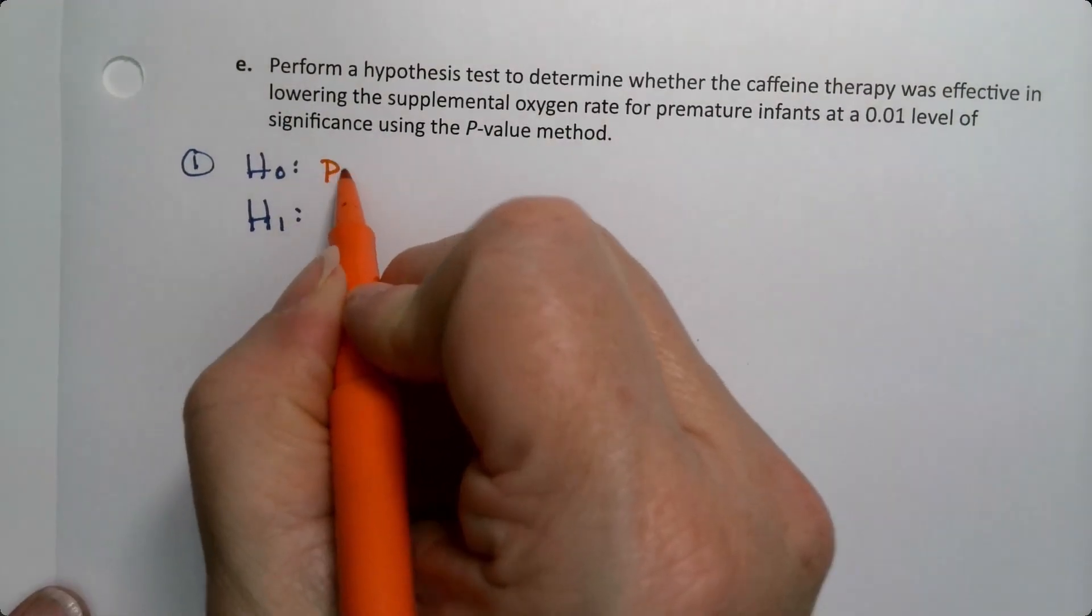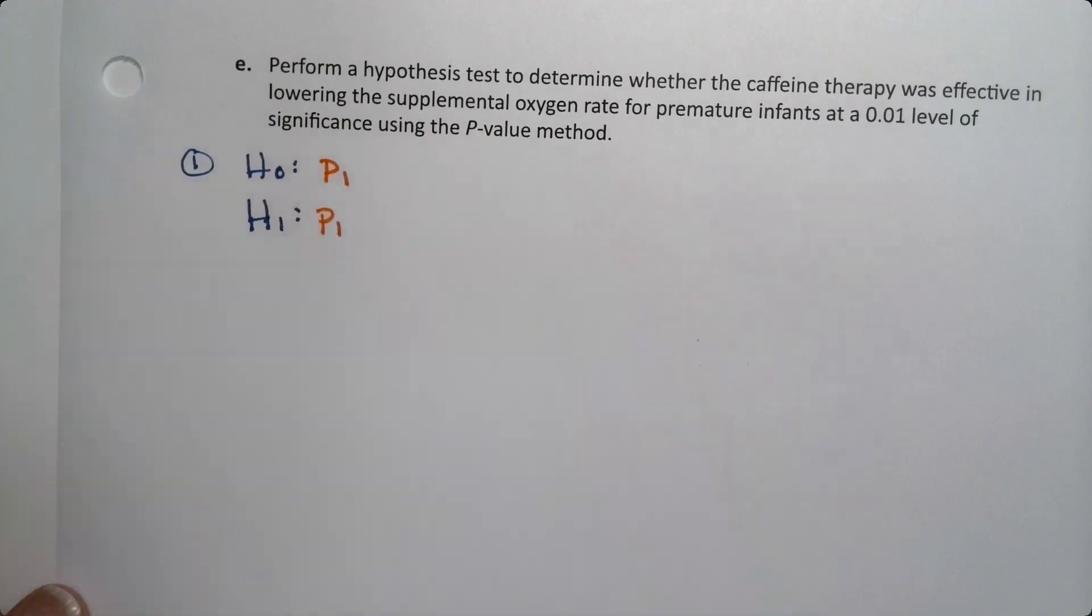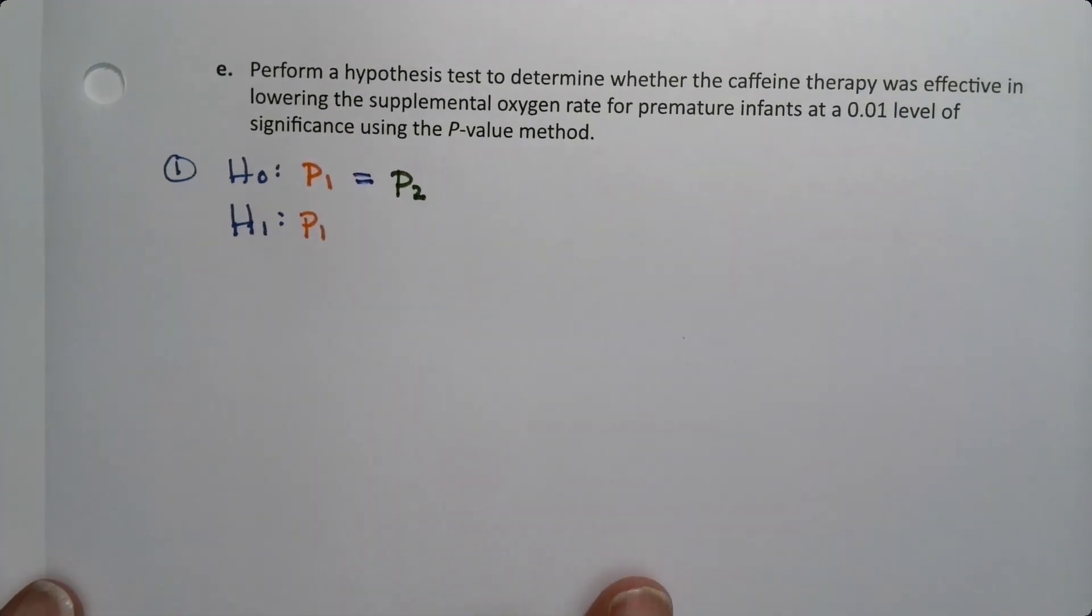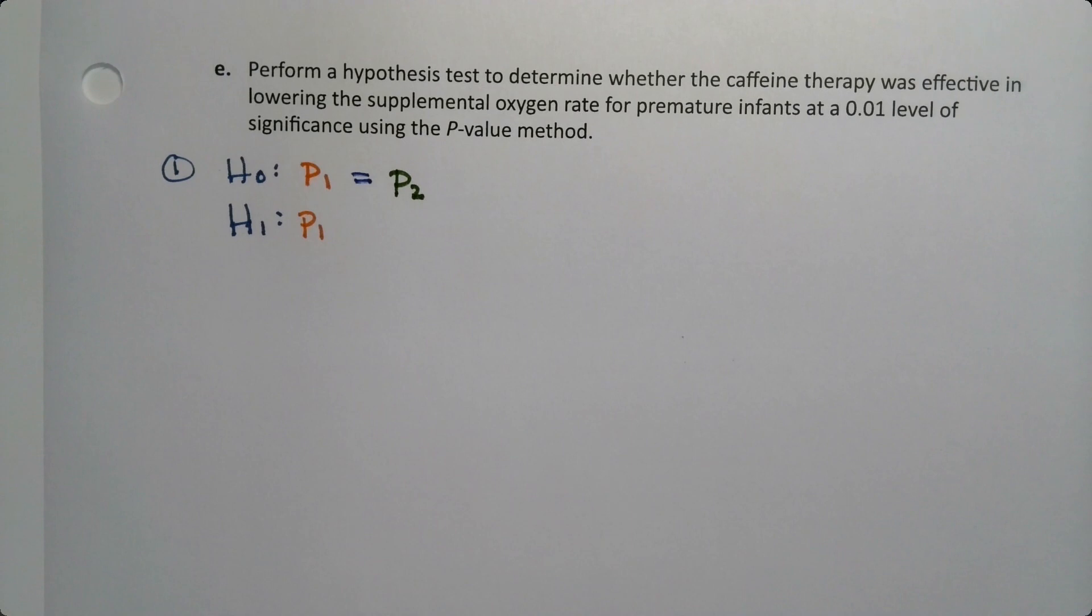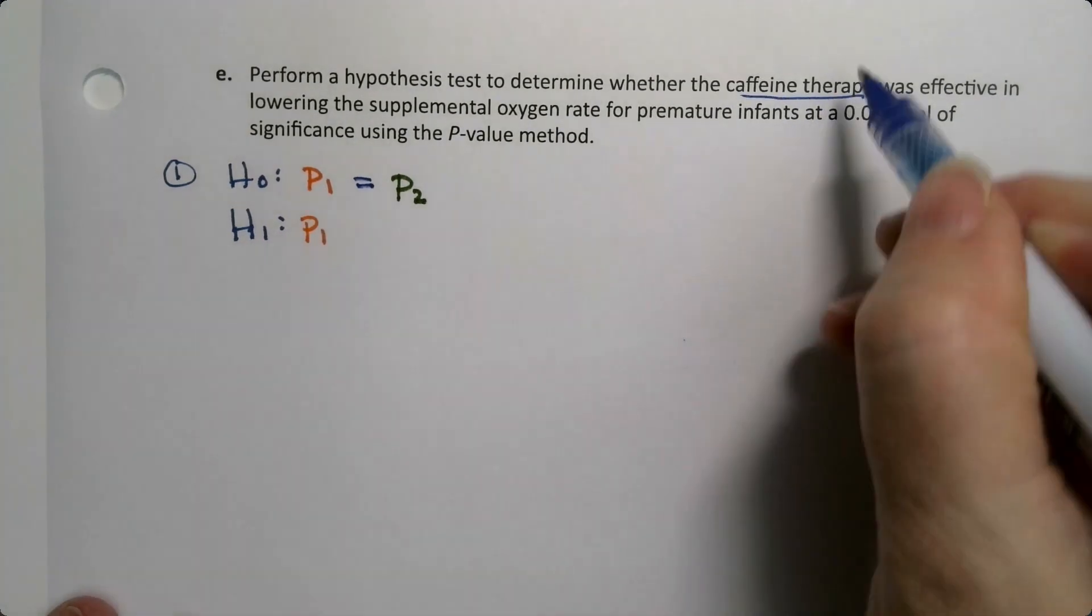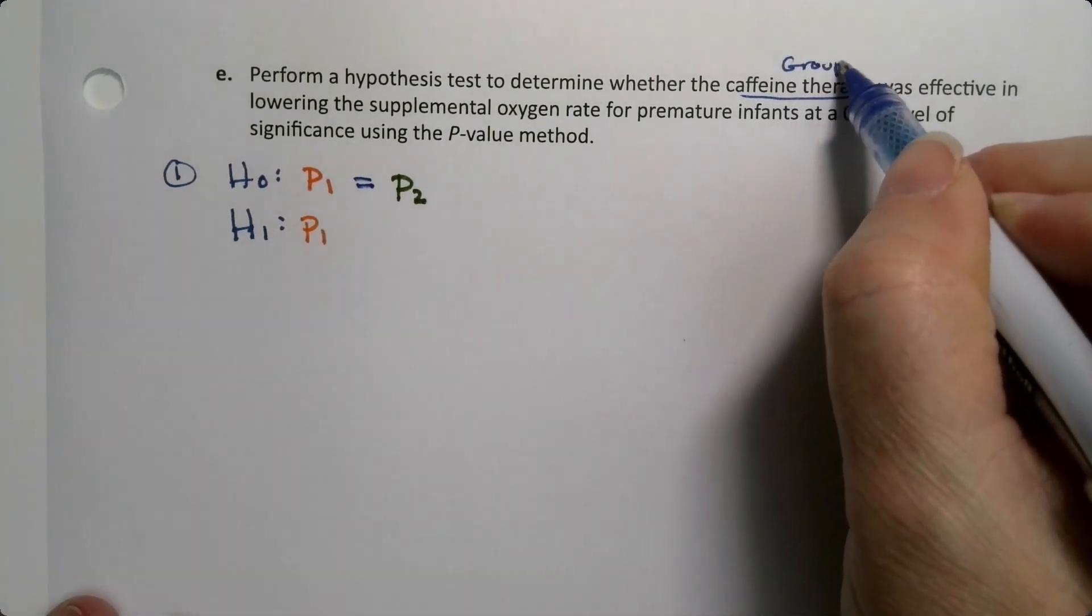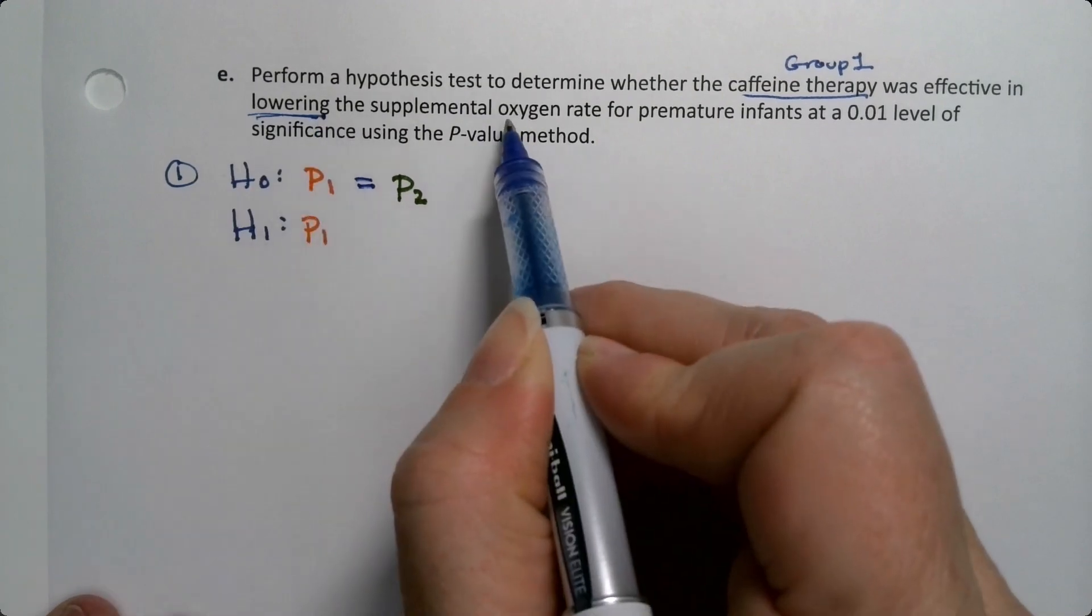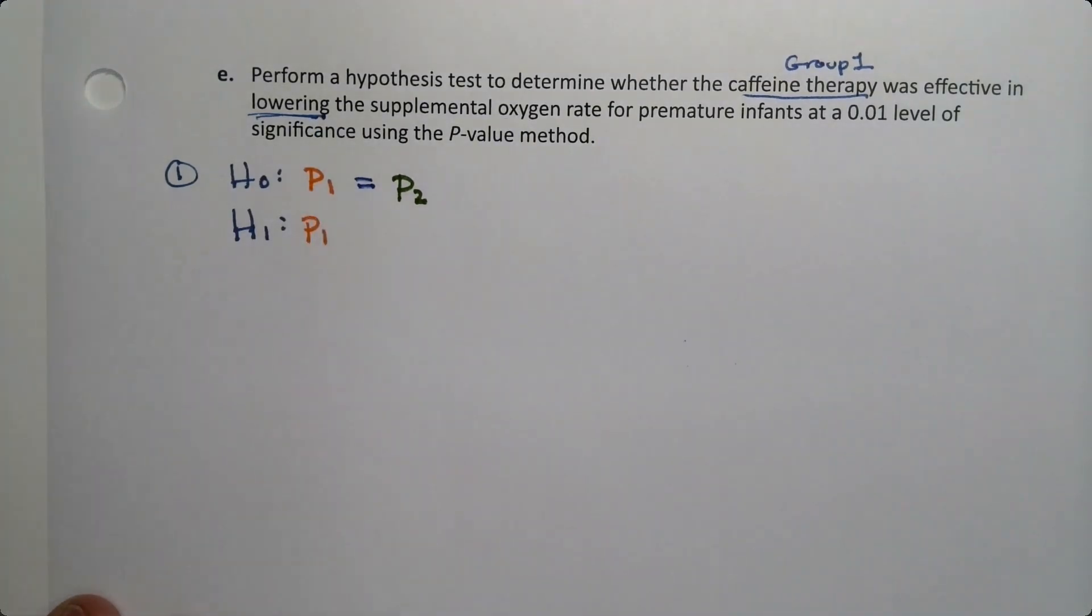So you say look, I have p1 here and I always assume equals - always - and p2. Now I have to think about which direction I want to go. What it's talking about up here is was the caffeine therapy - that's group one - effective in lowering the supplemental oxygen rate, so in other words is group one lower than group two.